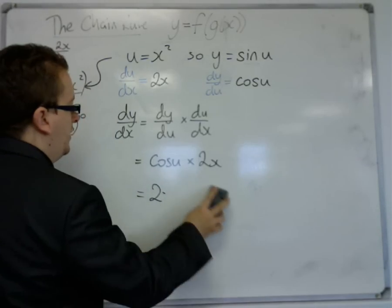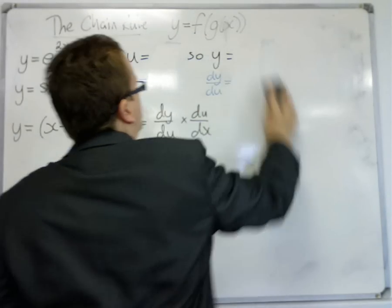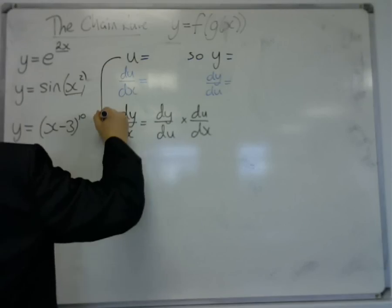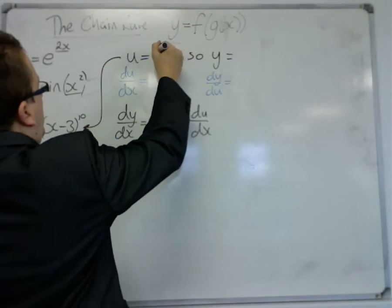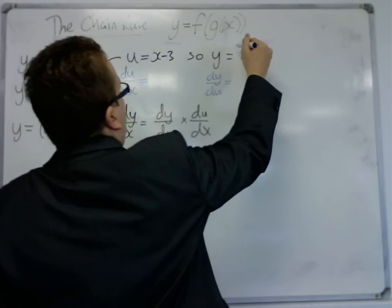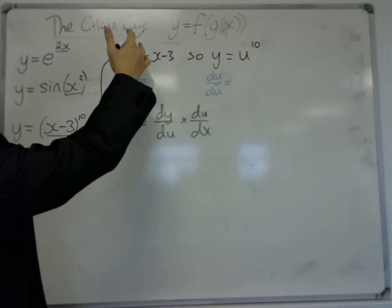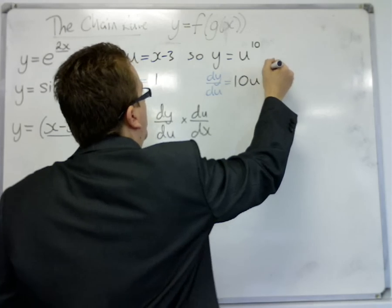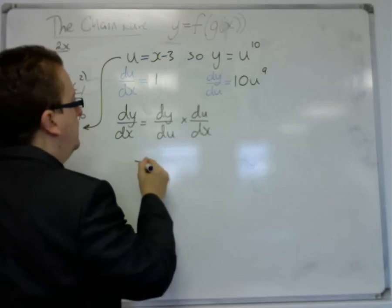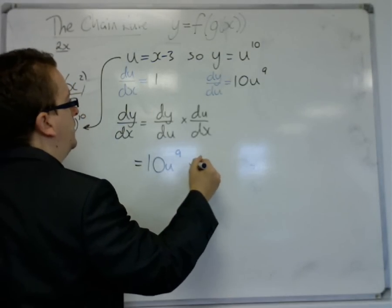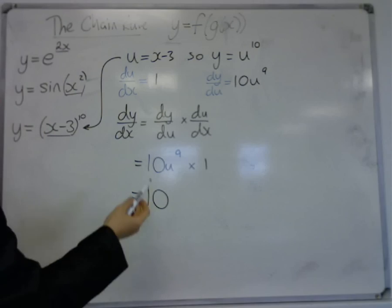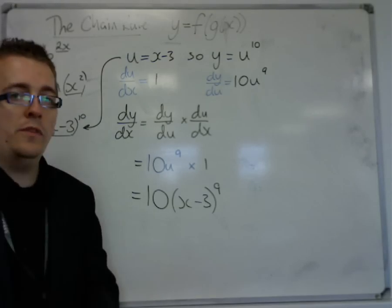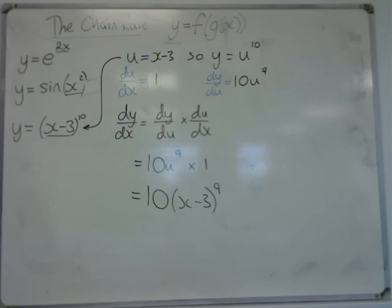Let's look at the final example here. Now we're looking at this one. In this case, the u is what is inside, the x minus 3. x minus 3 differentiates to 1, and dy/du differentiates to 10u to the 9. So dy/dx is dy/du times du/dx, which is just 10 lots of u to the 9. So this is using the chain rule, three different examples.